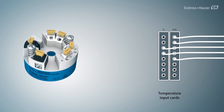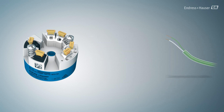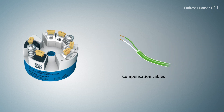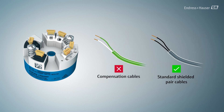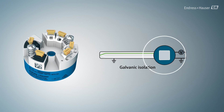The use of temperature transmitters has several advantages over direct wiring. Instead of temperature input cards, a cost-efficient analog input card can be used. Expensive extension or compensating cables for thermocouple measurements can be replaced by standard shielded pair cables. In addition, transmitter features like galvanic isolation help to lower measuring errors by avoiding ground loops, specifically for thermocouples.